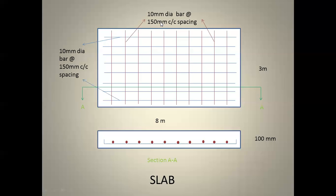For formwork, a flat plate is arranged at the slab level. For the rebar, we take an 8-meter bar and bend both ends, placing it at 150 mm center-to-center spacing in the formwork. Then we take 3-meter bars and place them in the y-direction at 150 mm spacing. With bars running in both directions, they form a mat, and we tie them together using binding wire.